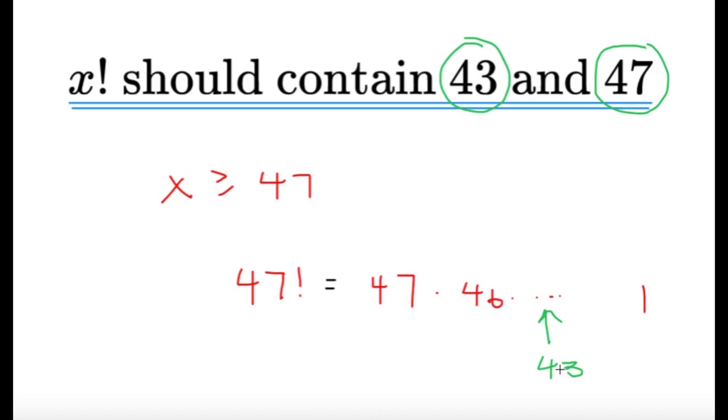We must make x at least 47 because, well, if x was less than 47, let's say 46 and below, then x factorial will never have a factor of 47.